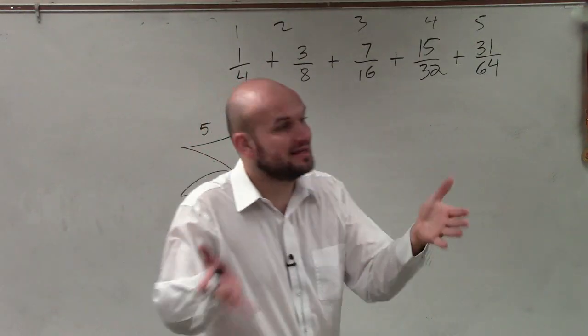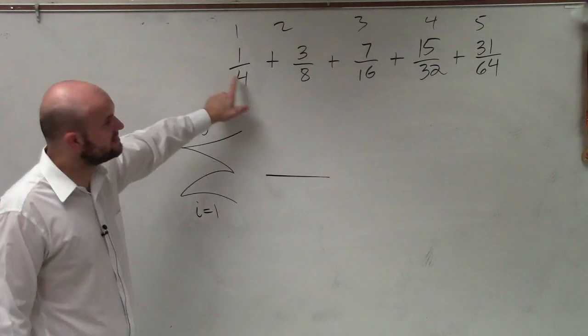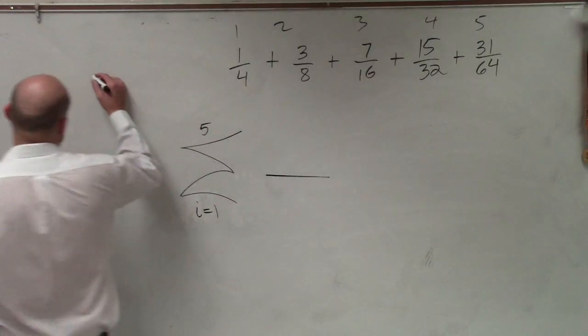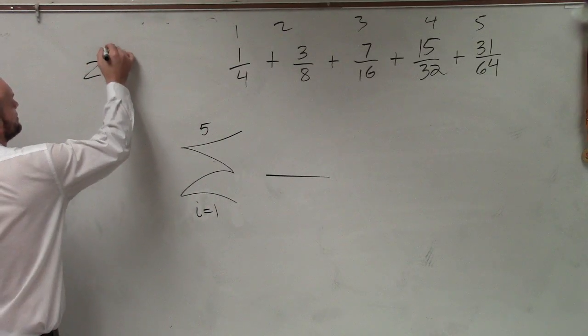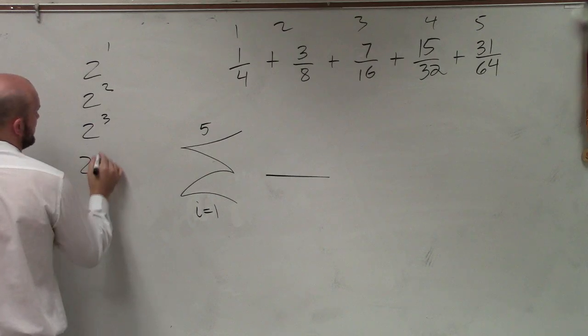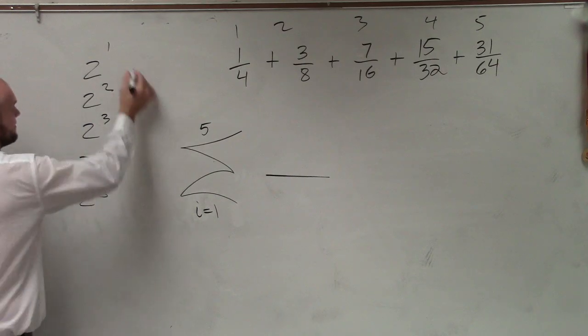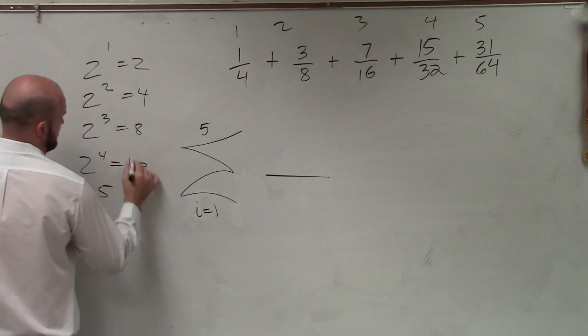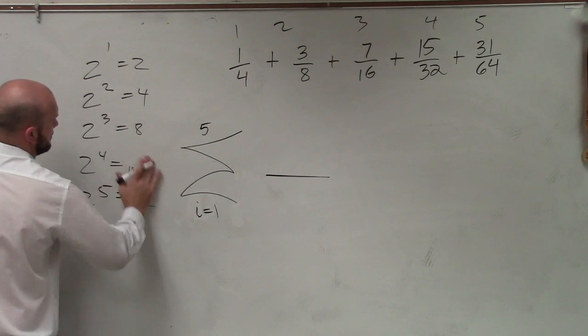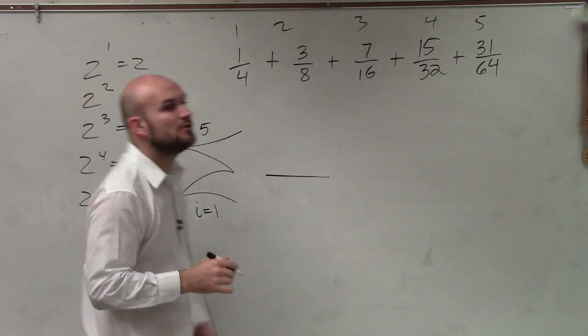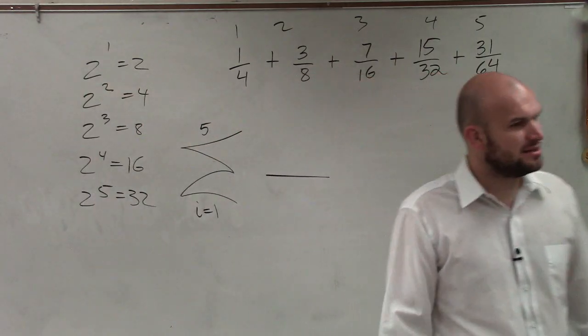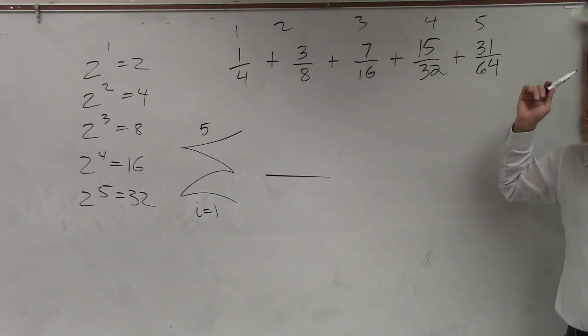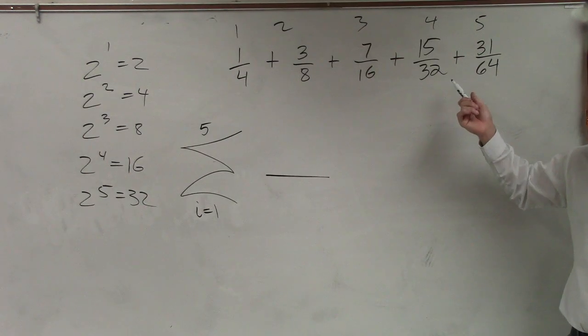But how about if I take a power? Now, what I notice about these is these are very similar to the powers of 2. What I mean by that is if I have 2 to the first, 2 squared, 2 cubed, 2 to the fourth, 2 to the fifth. Those are the powers of base 2. Does everybody see that? Do you guys see how very close those numbers are to my numerators? They're the same thing, but just subtracting 1.